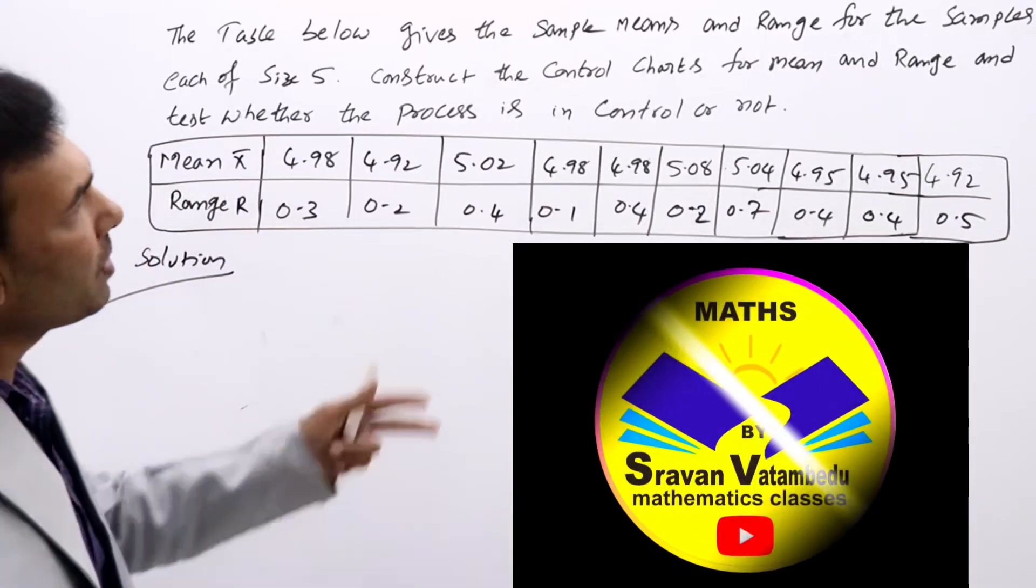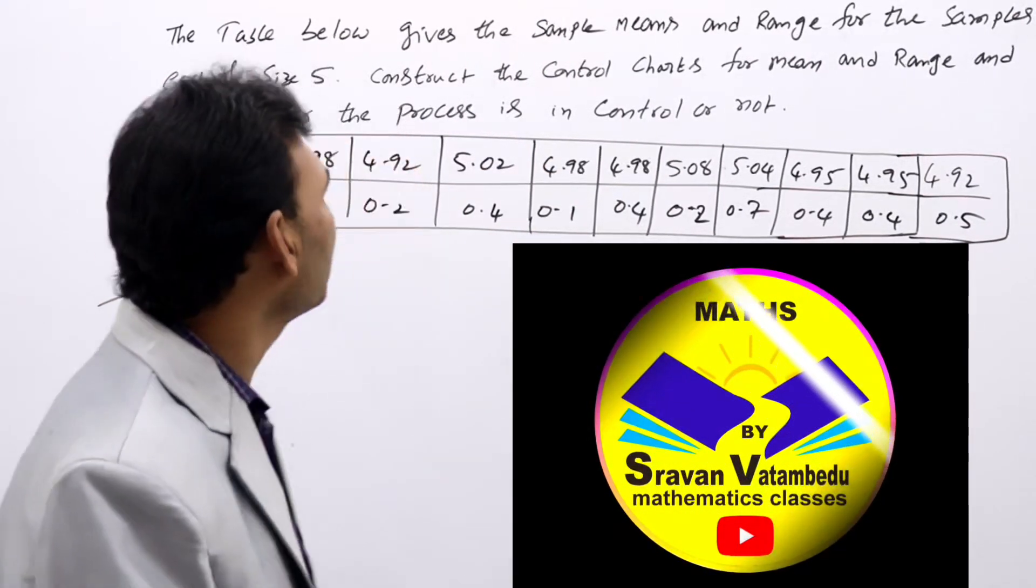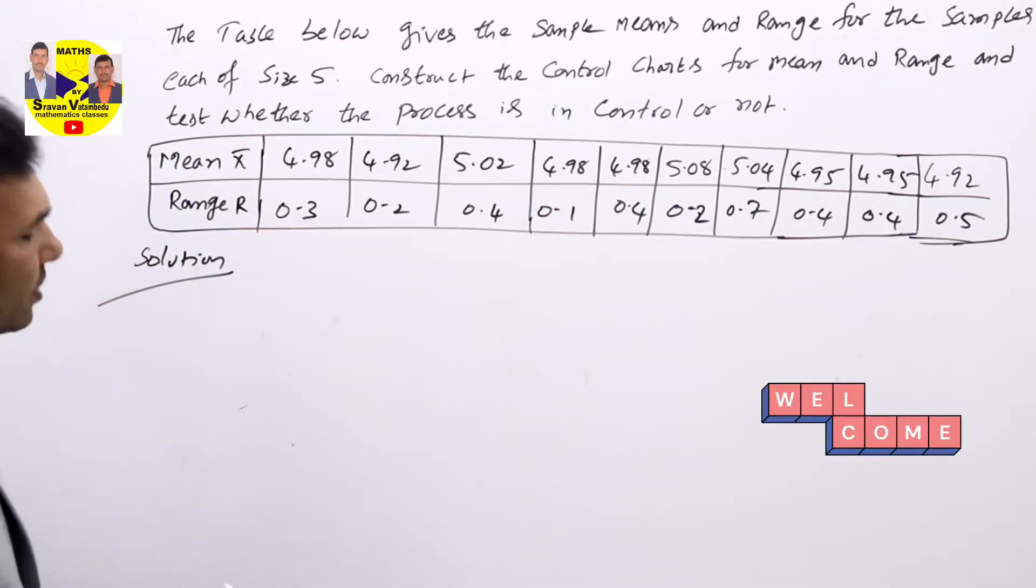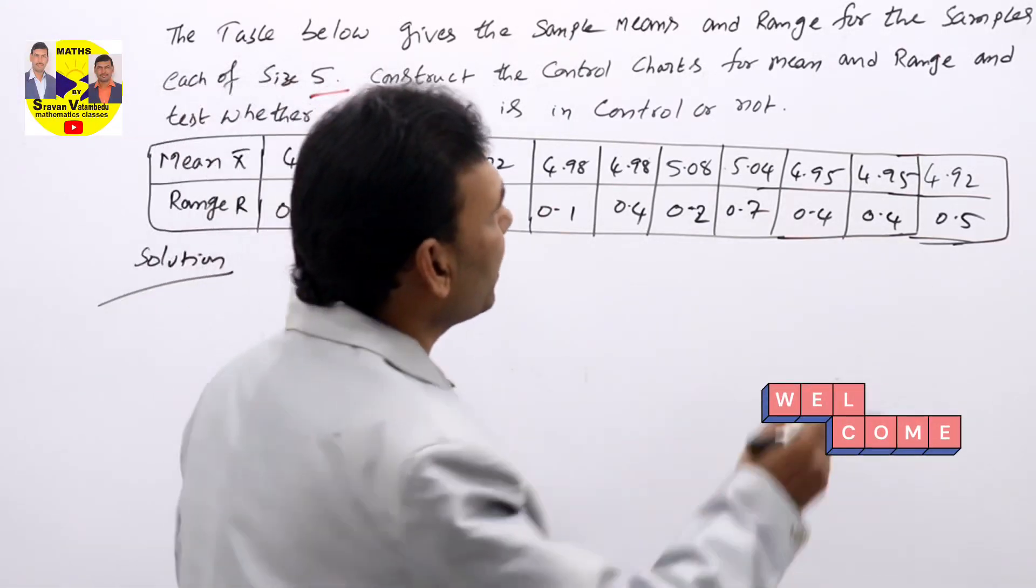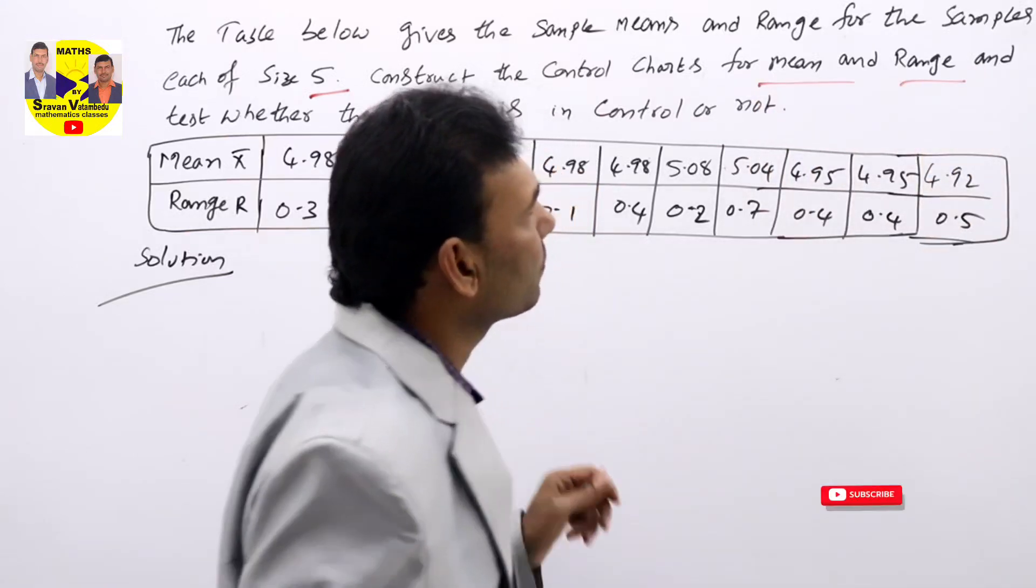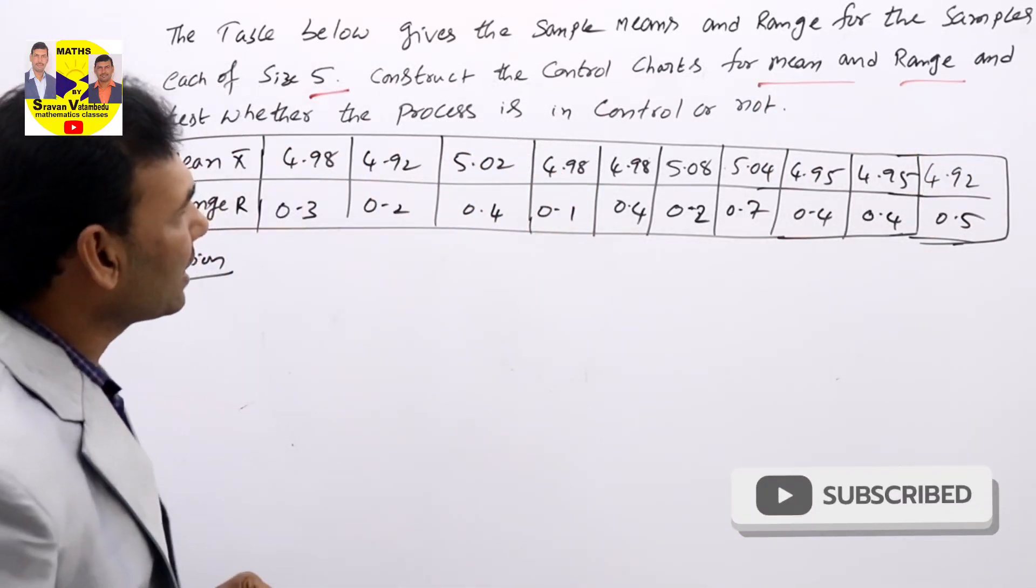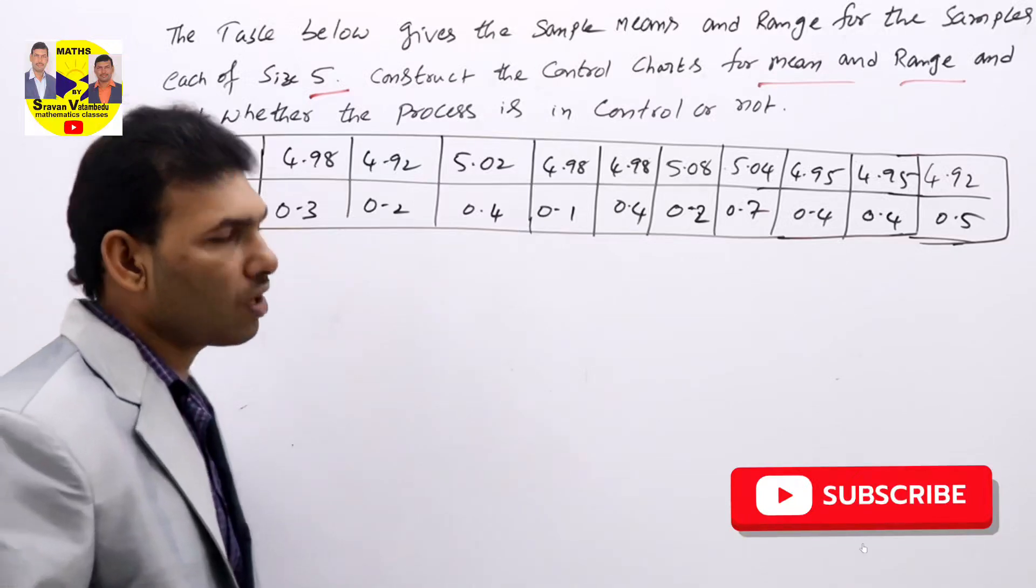The table below gives the sample means and range for the samples, each of size 5. Construct the control charts for mean and range and test whether the process is in control or not.